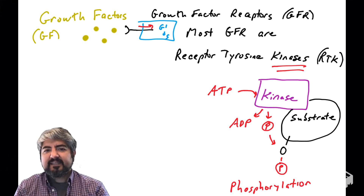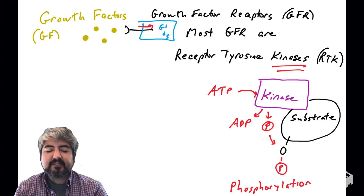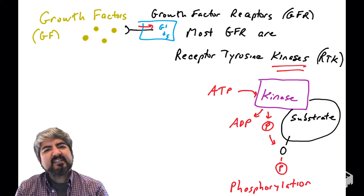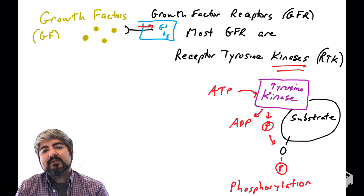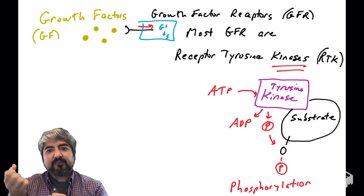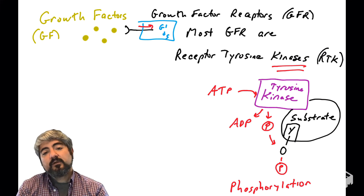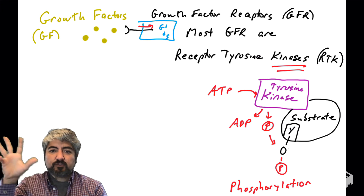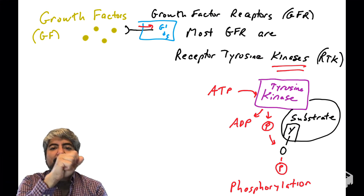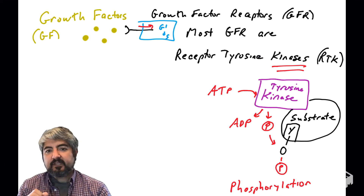So, receptor tyrosine kinases: growth factor receptors have a kinase region — a kinase domain — within the receptor. Tyrosine is an amino acid with a hydroxyl group. Tyrosine kinases are enzymes that transfer a phosphate group to a tyrosine hydroxyl. If a protein is a tyrosine kinase, it will transfer the phosphate group from ATP to a very specific tyrosine in its substrate — not every tyrosine, but a specific one.